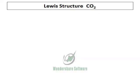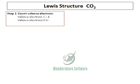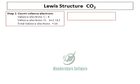We are doing the Lewis structure of carbon dioxide. To do the Lewis structure, the first thing we do is to count the valence electrons. The valence electron for carbon, because it belongs to group 4, is 4. And the valence electron for oxygen is 6 times 2, that's 12. Therefore, the total valence electron comes to 16.